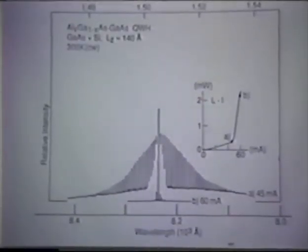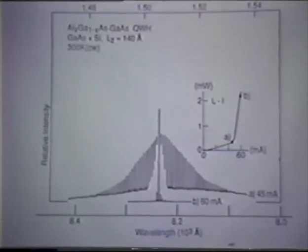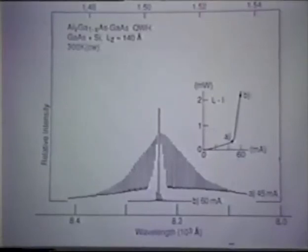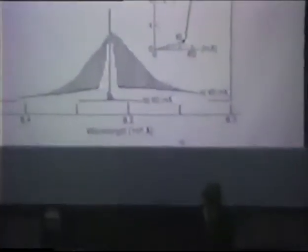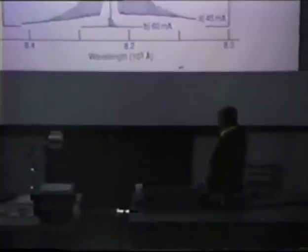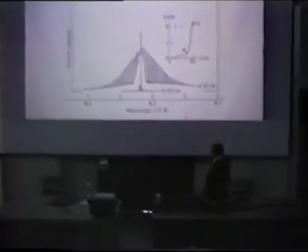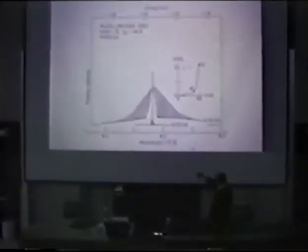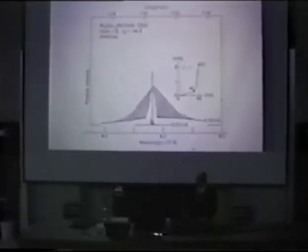You see almost all of the intensity is just in one frequency. That's macroscopic occupation of a single frequency. And that comes from stimulated emission, as the emission probability is proportional to the number of photons present in the quantum state. As the number increases, the probability of radiation into that quantum state increases. So you get what's called a super-linear increase in light intensity with current flow.